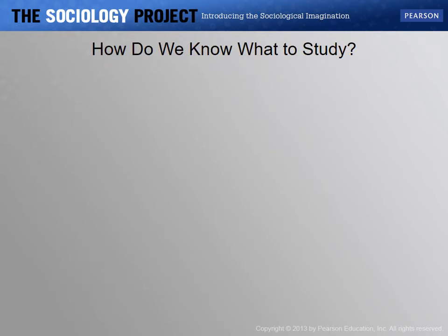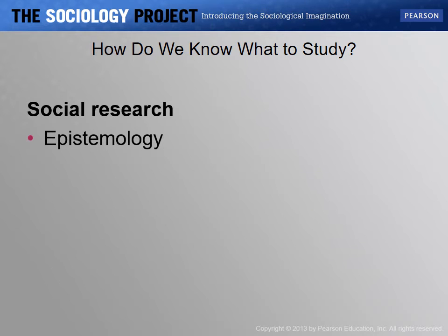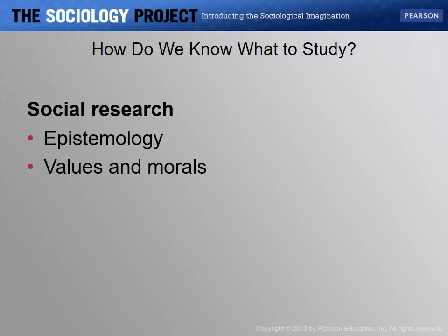The places that we get information from include epistemology, which is the understanding of where we get knowledge from. Epistemology typically comes from tradition — what we've already studied in the past. It also comes from our values and morals, which often drive why we study what we study.